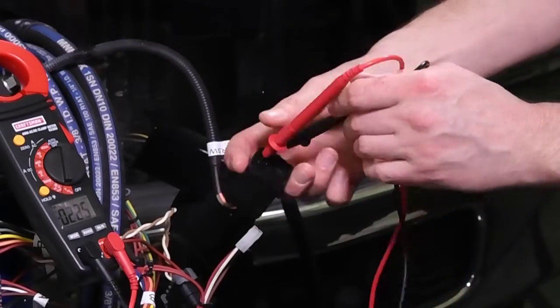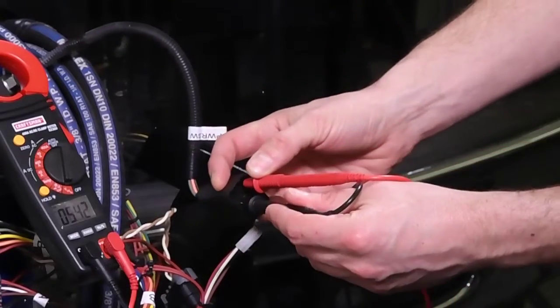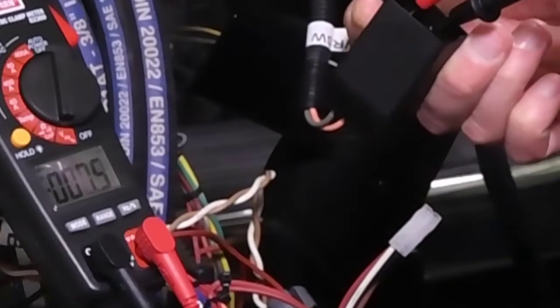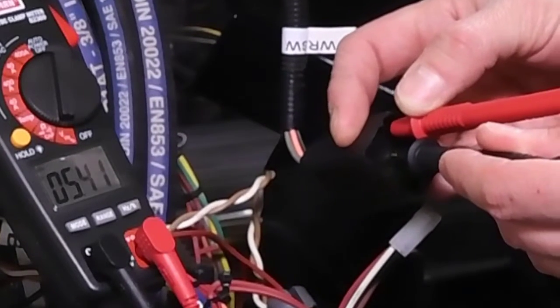Insert one probe into the top right socket ensuring that the gray wire is on top. Then check for the voltage on both center sockets.